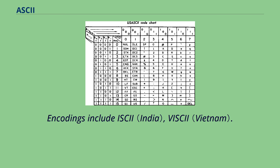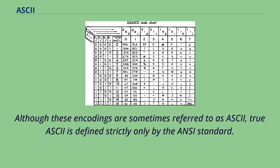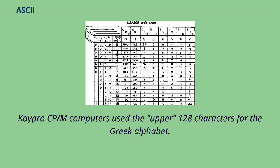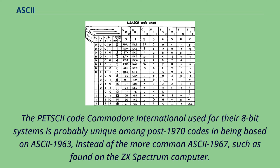Encodings include ISCII and VISCII. Although these encodings are sometimes referred to as ASCII, true ASCII is defined strictly only by the ANSI standard. Most early home computer systems developed their own 8-bit character sets containing line drawing and game glyphs, and often filled in some or all of the control characters from 0 to 31 with more graphics. CP/M computers used the upper 128 characters for the Greek alphabet. The PETSCII code Commodore International used for their 8-bit systems is probably unique among post-1970 codes in being based on ASCII 1963, instead of the more common ASCII 1967, such as found on the ZX Spectrum computer.